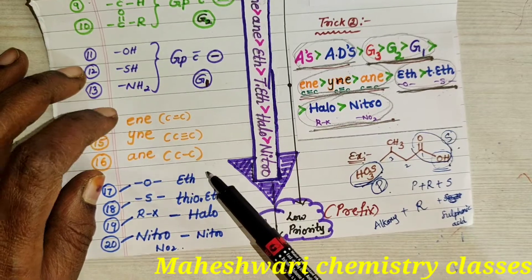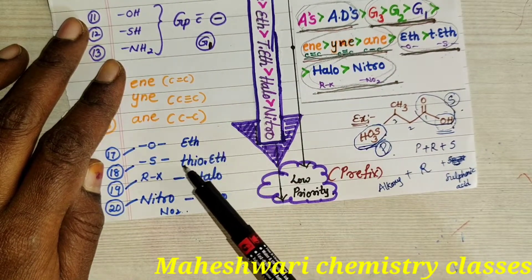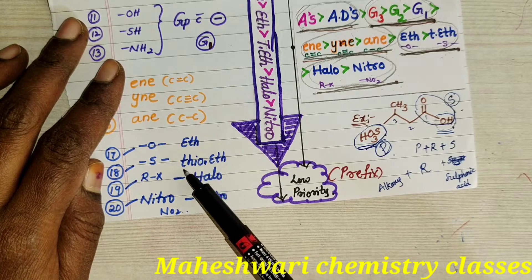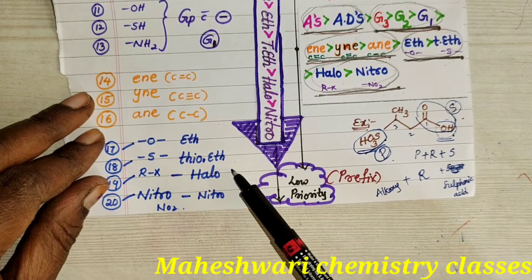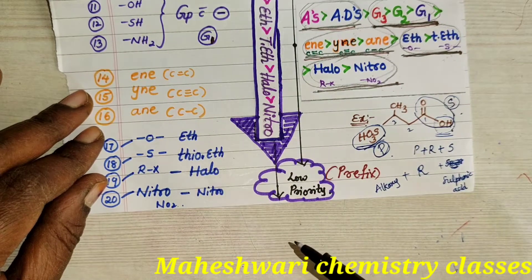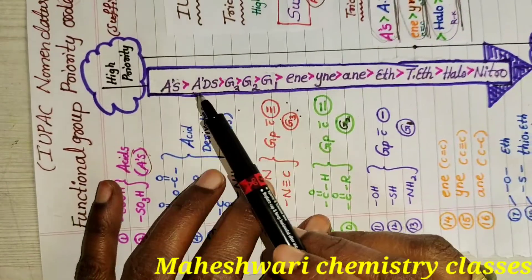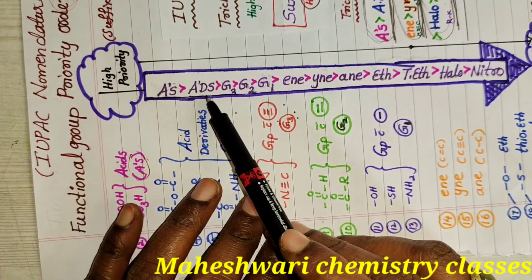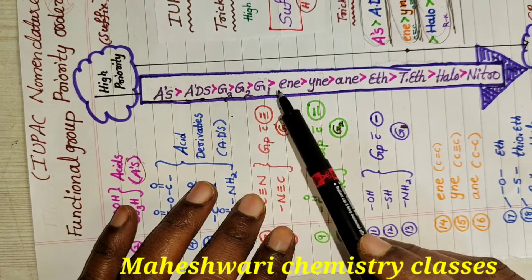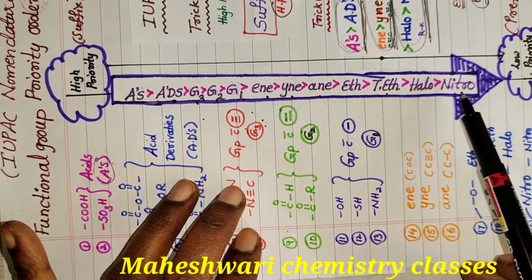Continuing the trick box: ether — E, thioether — teeth, alkyl halide — halo, nitro — nitro. So the shortcut sequence from high priority to low priority is: A (acids) > ADs (acid derivatives) > G3 (triple bond) > G2 (double bond) > G1 (single bond) > ene > yne > ane > eeth (ether) > teeth (thioether) > halo > nitro.